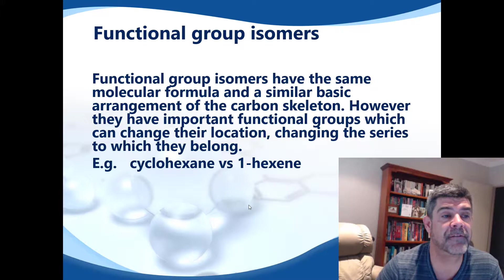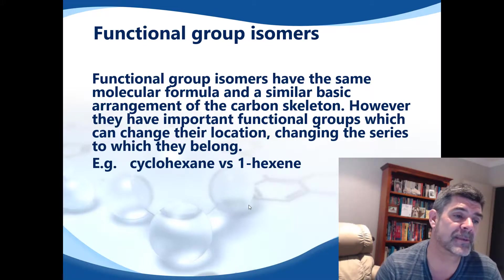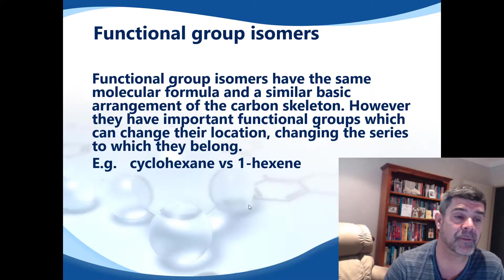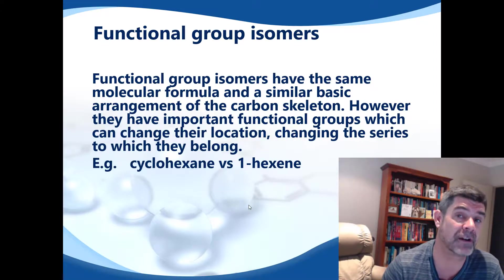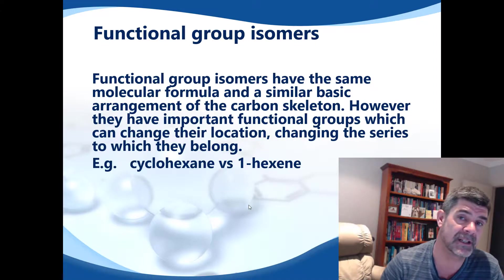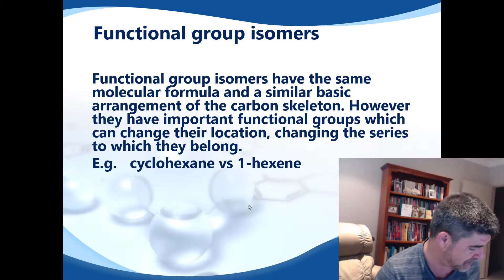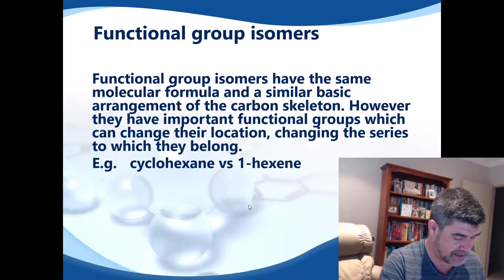The final group to look at are functional group isomers. Functional group isomers have the same basic molecular formula and a similar arrangement of the carbon skeleton. The difference is that there is now a change in the functional group. Let us have a look at something like hex-1-ene and cyclohexane.